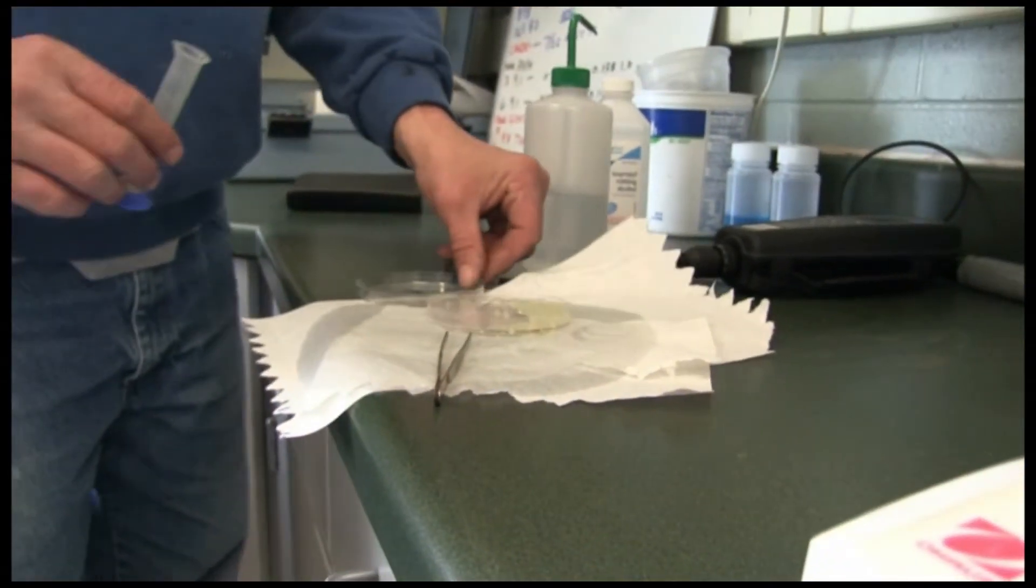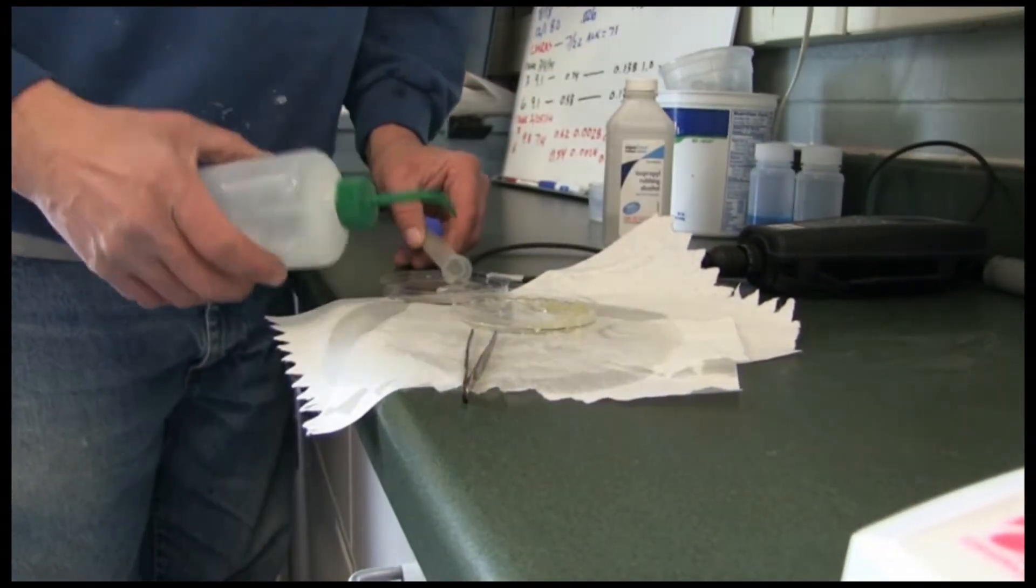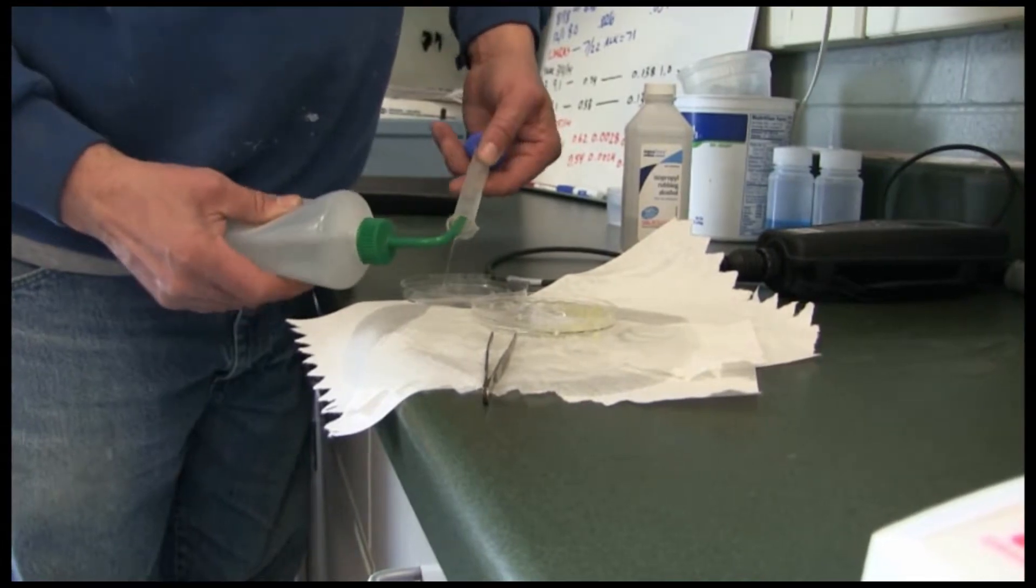Next, pour the eggs and water from the cylinder into an empty petri dish. You may need to rinse out the cylinder to get all the eggs out.